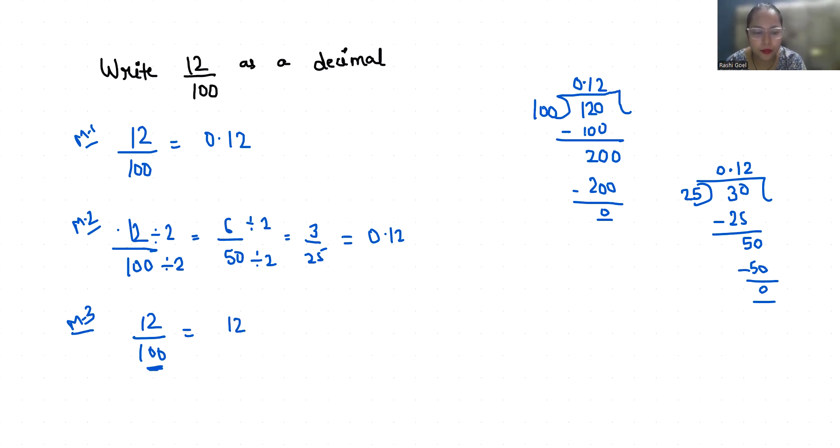We will put the decimal here, and there is no digit before the decimal, so we will put zero. So it becomes 0.12. So these are the three methods that you can convert any fraction into decimal.